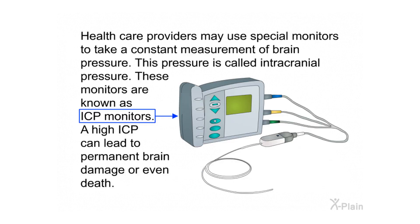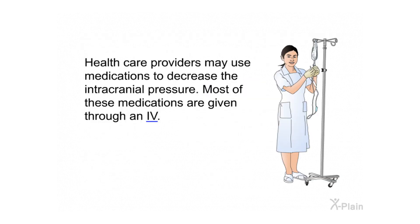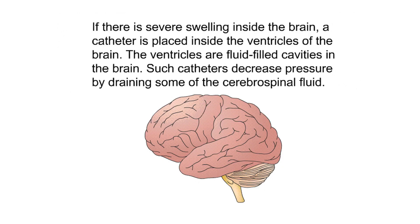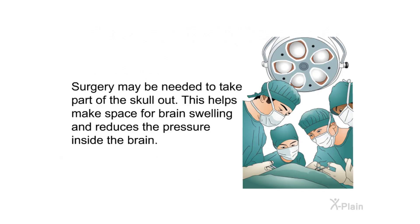Healthcare providers may use special monitors to take constant measurements of brain pressure, called intracranial pressure, or ICP. A high ICP can lead to permanent brain damage or even death. Medications to decrease ICP are most often given through an IV. If there is severe swelling, a catheter placed inside the ventricles of the brain can decrease pressure by draining some of the cerebrospinal fluid. Surgery may also be needed to remove part of the skull, creating space for brain swelling and reducing pressure inside the brain.